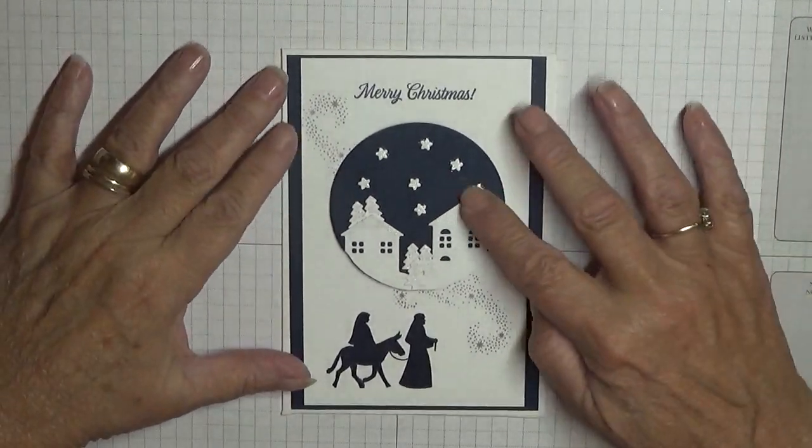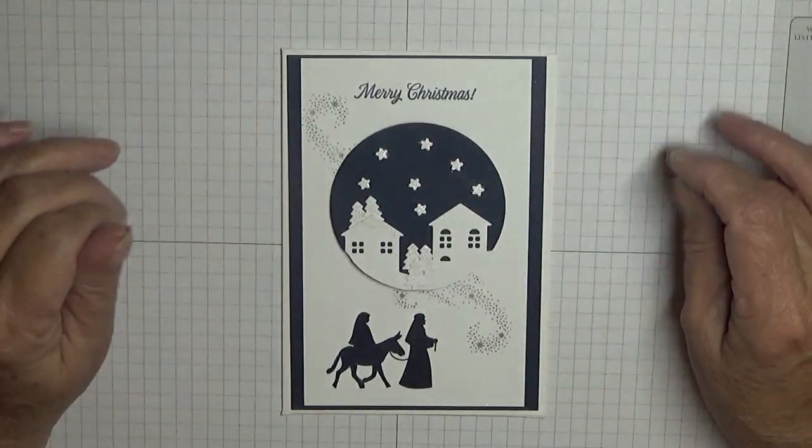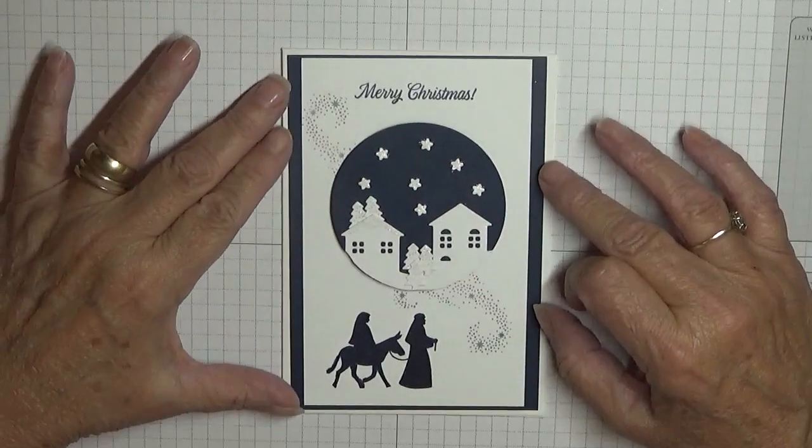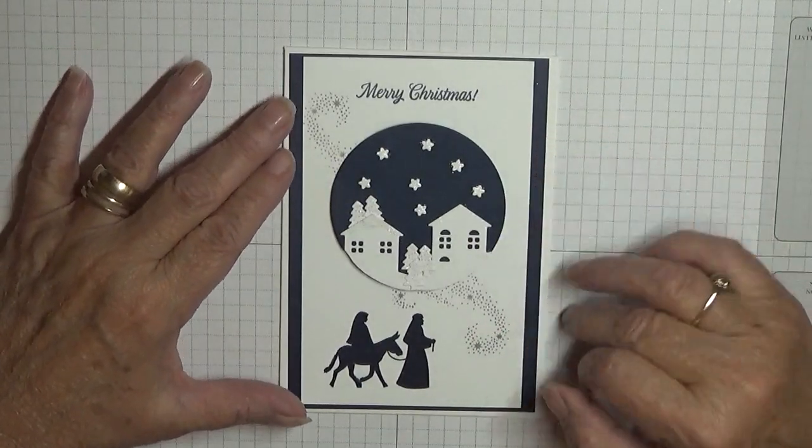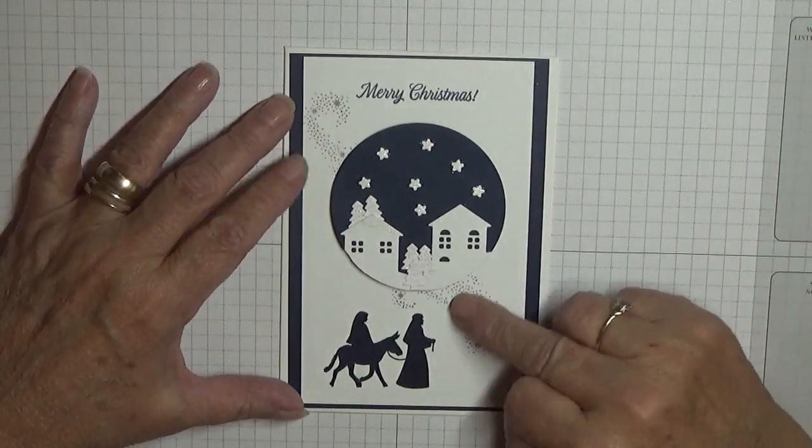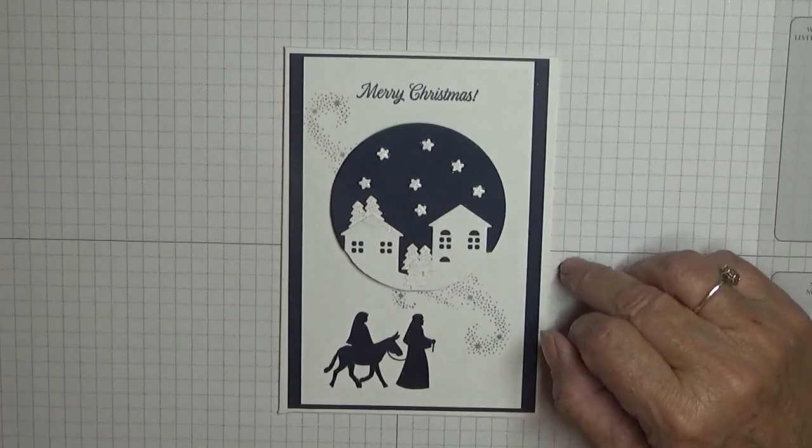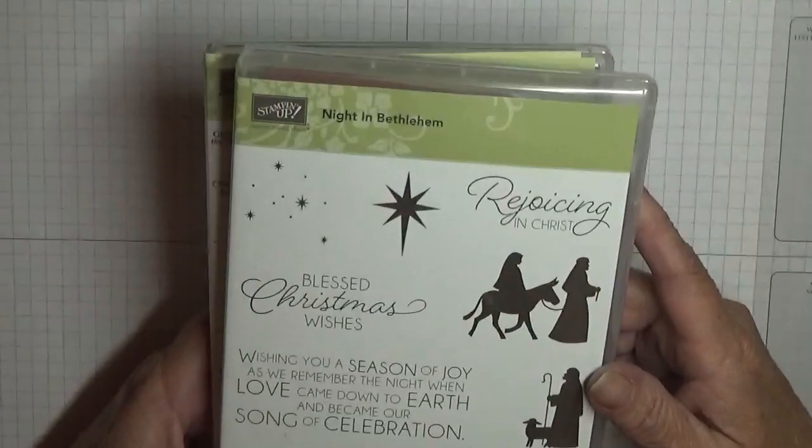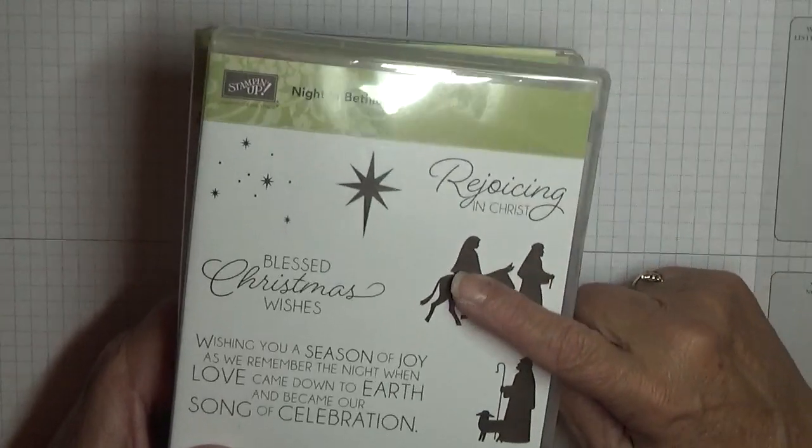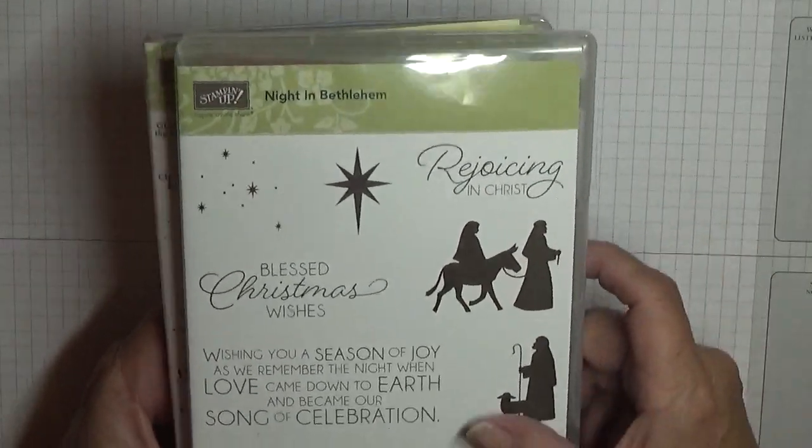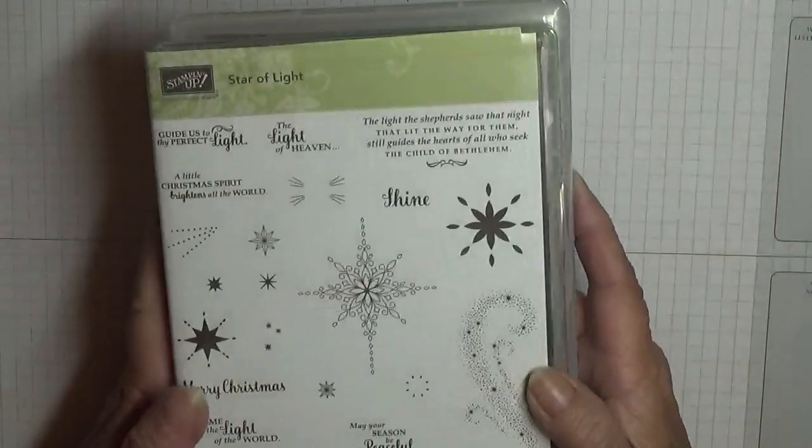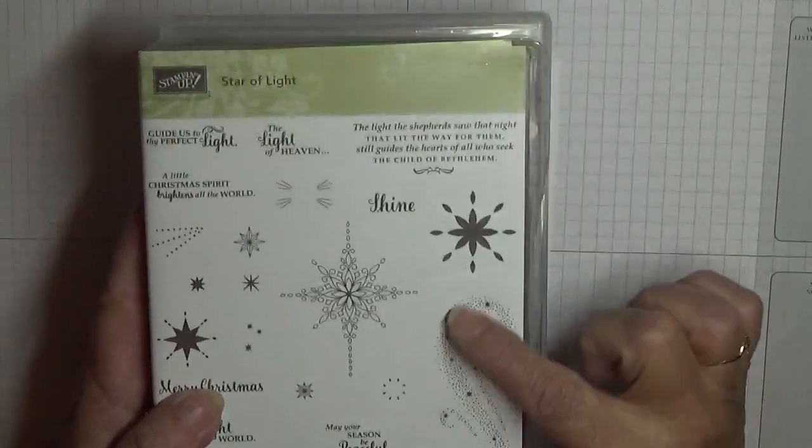Hello, Georgia Burns here. Today I'd like to show you how I made this card. It's using a retired stamp set, or two actually because that's retired as well. The stamp set I'm using is Night in Bethlehem and I'm going to be using Mary and Joseph and Star of Light and I'm going to be using the swirl.